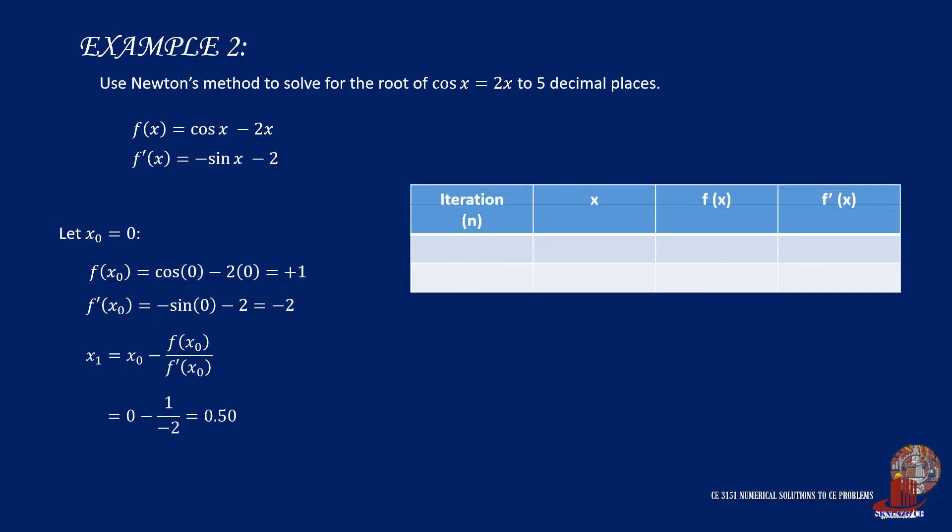To clearly identify values especially with long decimals, it is recommended to tabulate. In this way, we can see clearly that the first iteration will be using 0.5 for x sub 1.